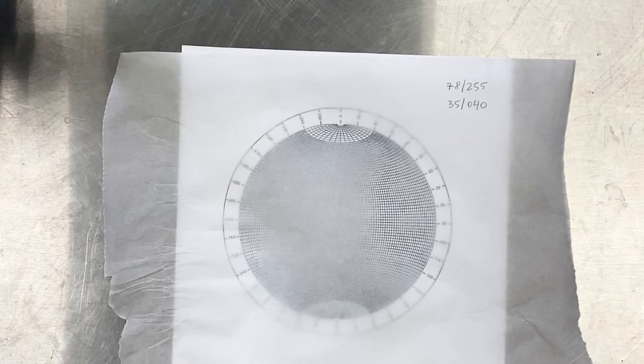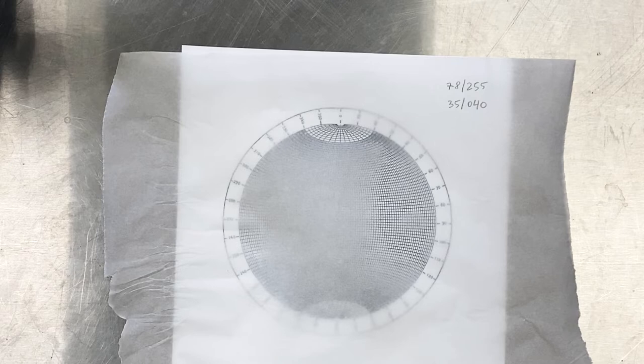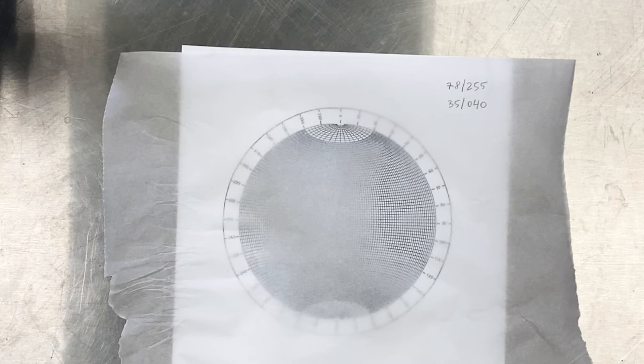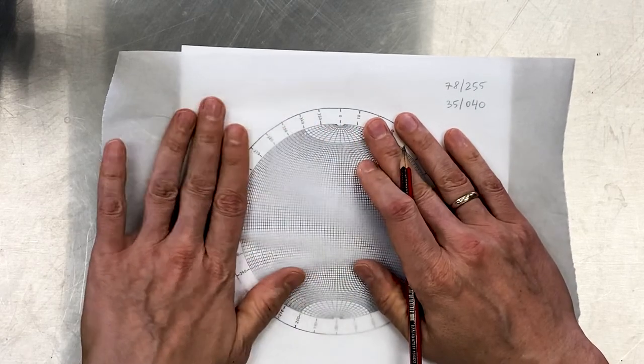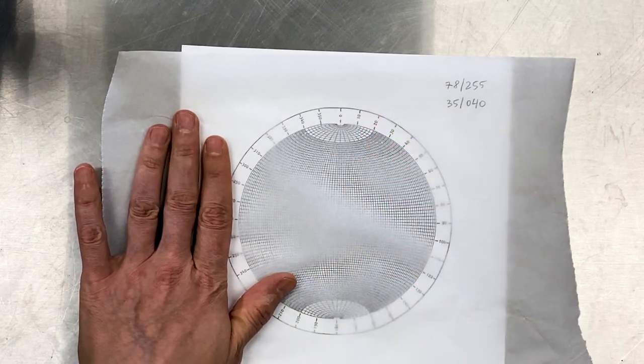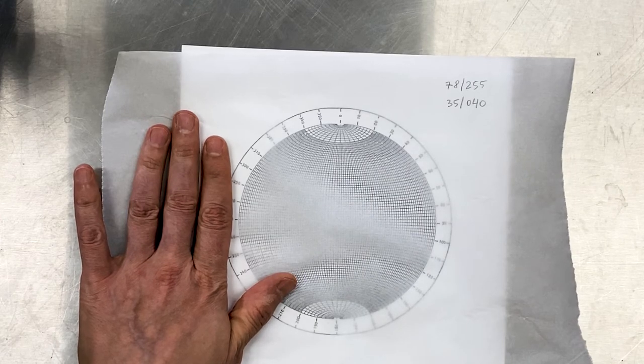This video will explain how to analyze data from field surveys when we measure dip and dip direction of discontinuities. We're going to have a stereonet and we will draw the data of dip and dip directions on the stereonet.